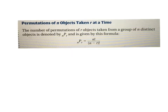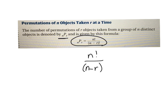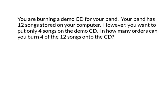Here's the permutation formula: when you're not taking all of the objects, put the total number on top and on the bottom do n minus the number you're selecting, then take that factorial. That's what we just did - top three teams meant n minus 3 on the bottom. Now another example: you're burning a demo CD for your band. Your band has 12 songs stored on your computer, but you want to put only four songs on the demo CD. How many orders can you burn those 12 songs in?